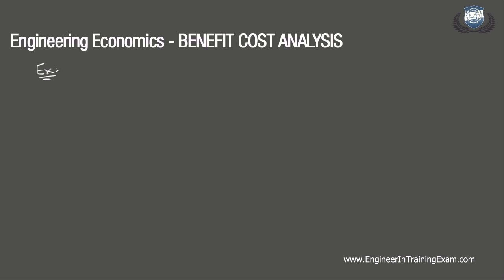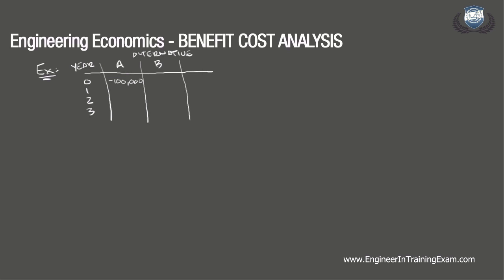A company is shown two investment alternatives to choose from. Each alternative has the following cash flows. Our first column is year, our second column is alternative A, and our third column is the cash flow for alternative B. Years 0, 1, 2, 3 have cash flows for alternative A as negative $100,000 initial cost, and years 1, 2, and 3 are all $25,000. Alternative B has an initial cost of $146,000 and benefits in years 1, 2, and 3 of $42,000. If the minimum acceptable rate of return is 4%, which alternative should be chosen using the benefit cost analysis?